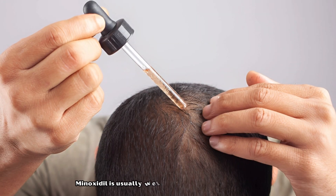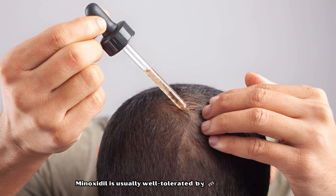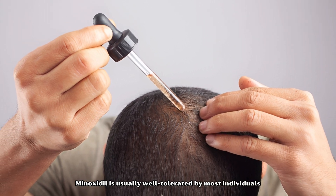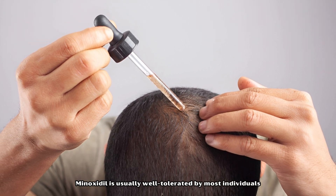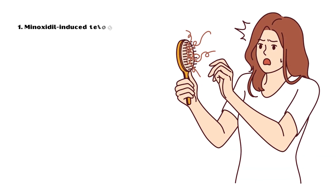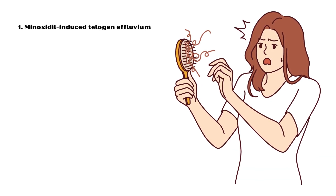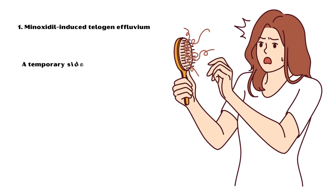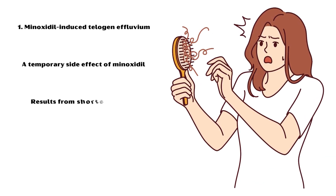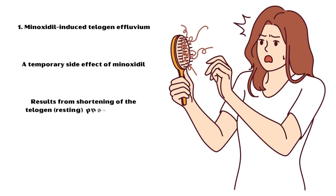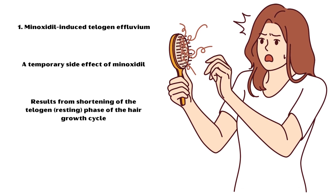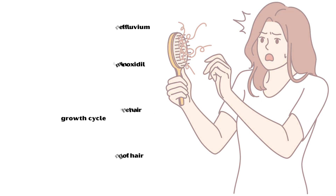Minoxidil is usually well tolerated by most individuals. If present, the most common adverse effects include the following. Minoxidil-induced telogen effluvium is a temporary side effect that results from shortening of the telogen, or resting phase, of the hair growth cycle, causing excessive shedding of hair.